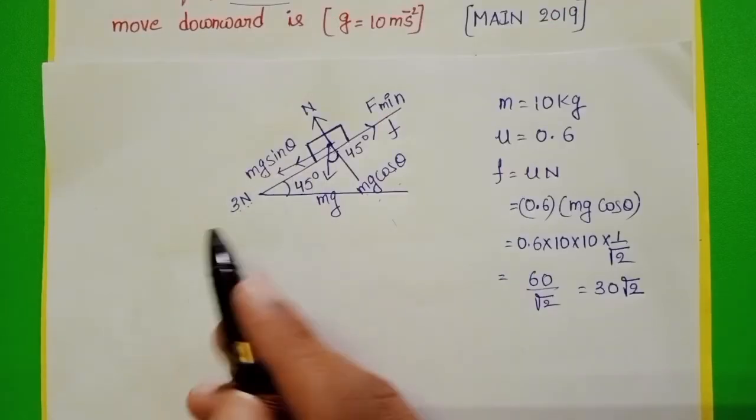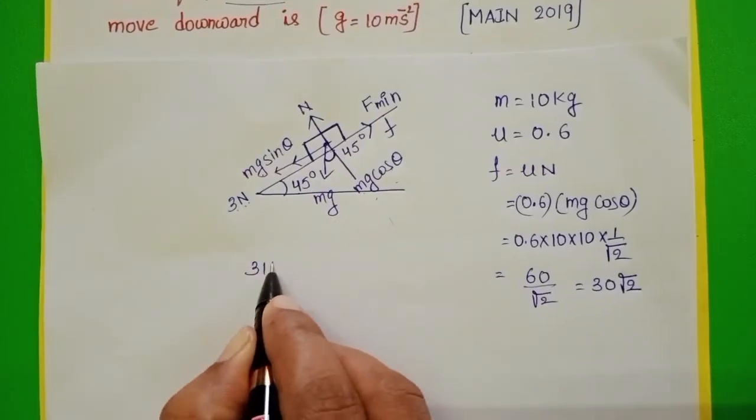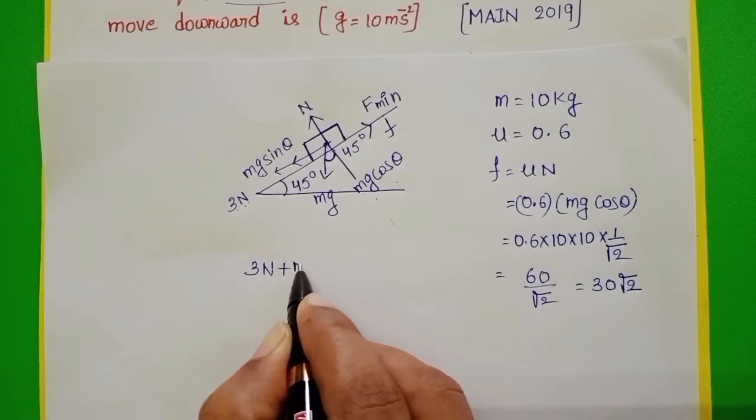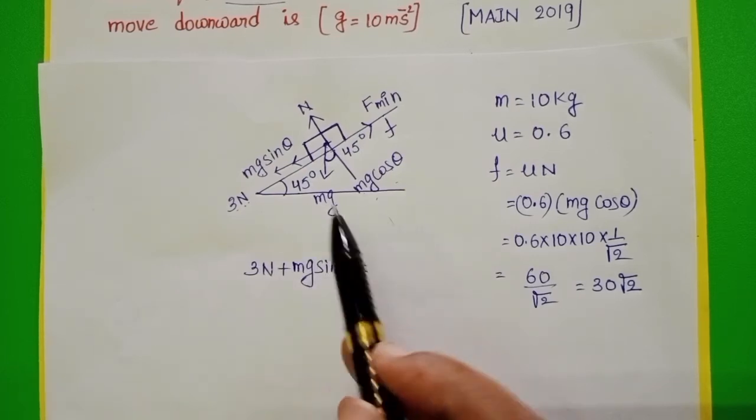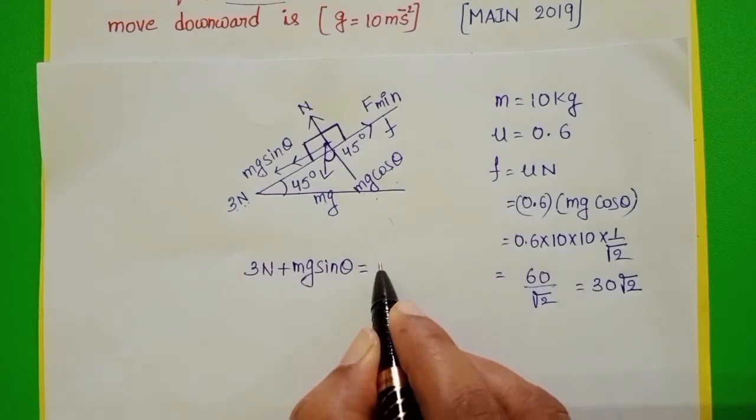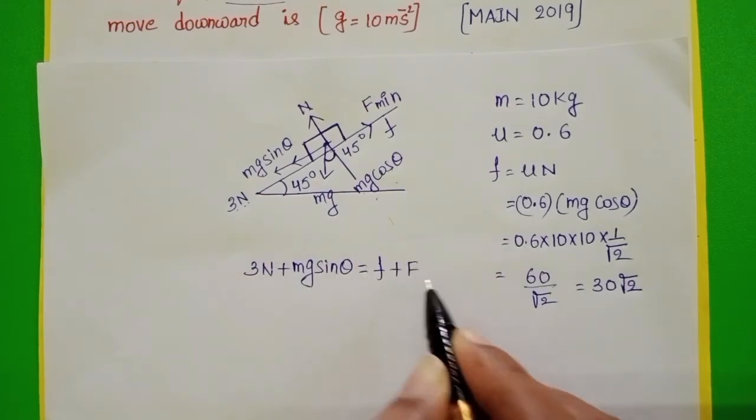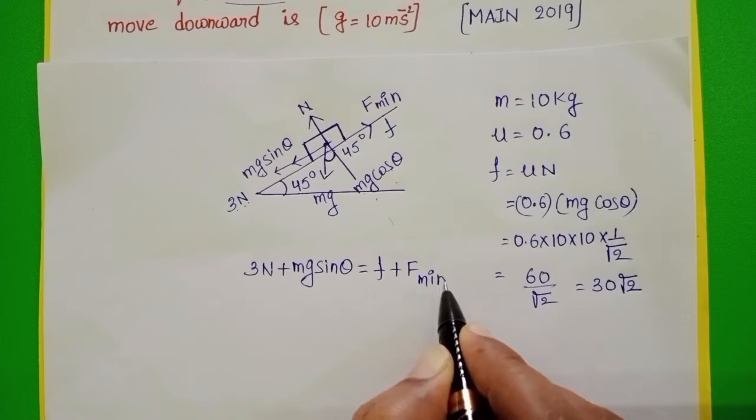Sum of the downward forces: 3 N plus Mg sin theta is equals to sum of the upward forces, frictional force plus minimum applied force.